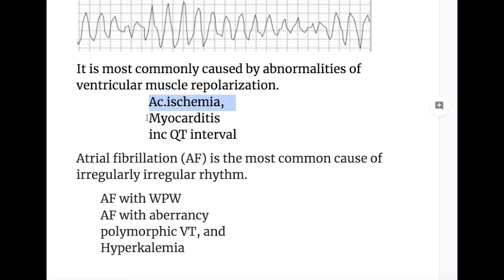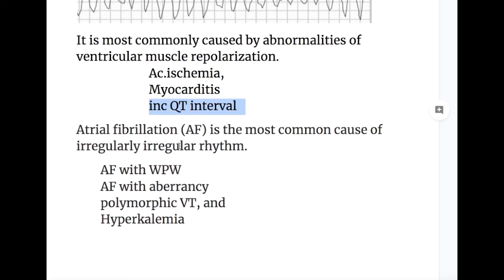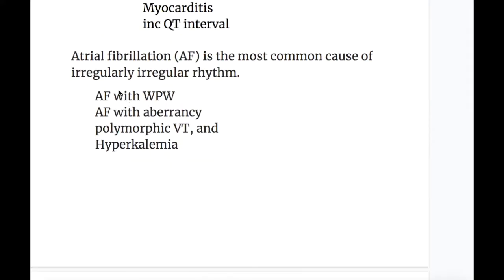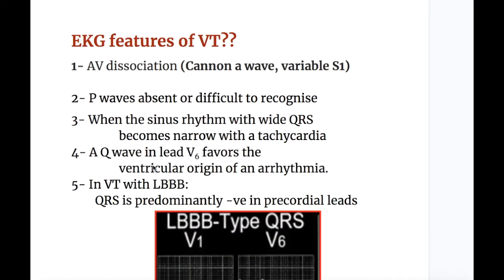The most common causes of polymorphic VT are acute ischemia or myocardial infarction, myocarditis, and prolongation of the QT interval. Atrial fibrillation is the most common cause of irregularly irregular rhythm. Other causes include AF with WPW, AF with aberrancy, atrial flutter with variable block, polymorphic VT, and hyperkalemia — all causing irregularly irregular rhythm.